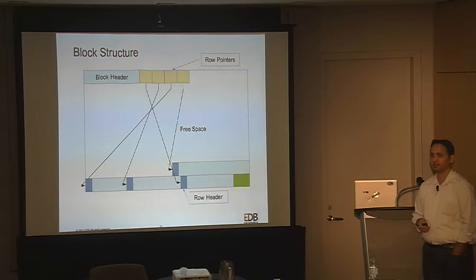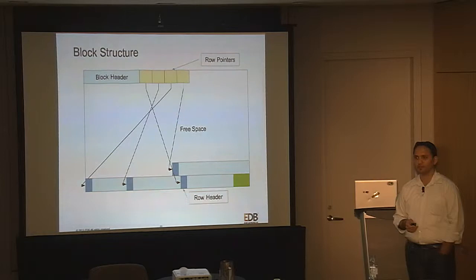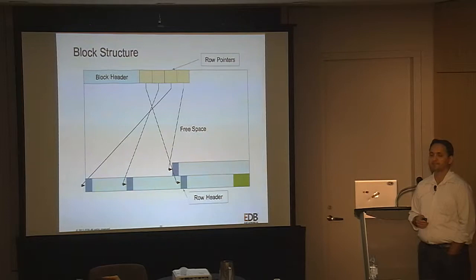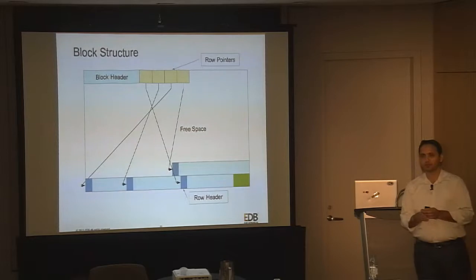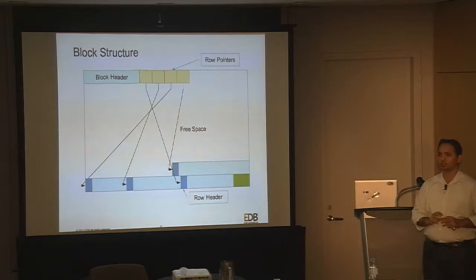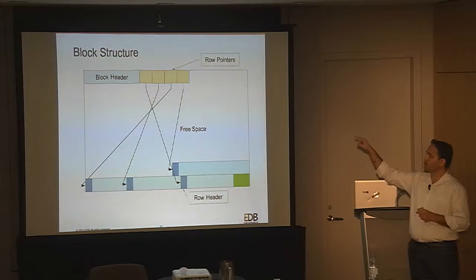Rows are not necessarily physically ordered in the table — even if you have a primary key, the actual physical rows might be scattered across different blocks in any order. The primary key index would tell you which row lies in which block. That order from the primary key tells you where each row is physically located. You land at the block, find the row pointer, and from that pointer you get the actual row.